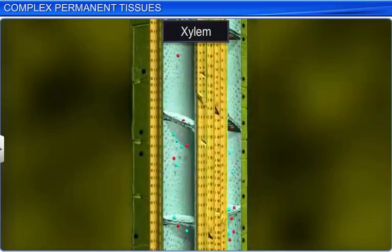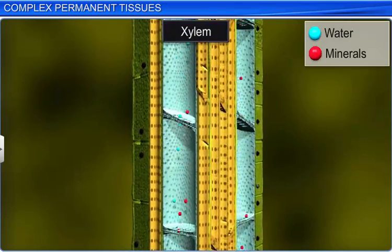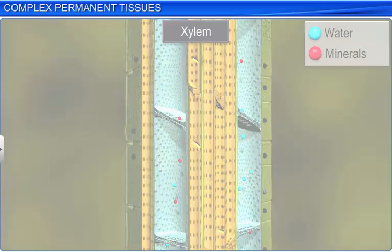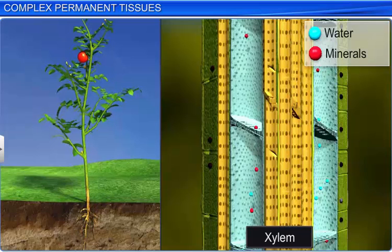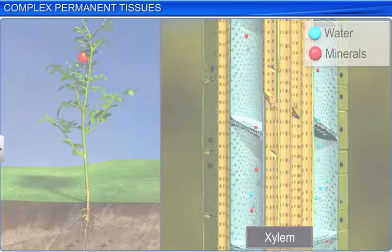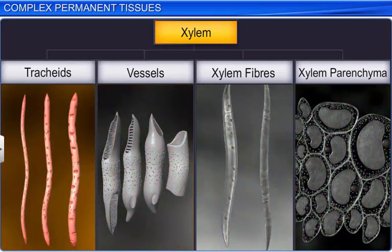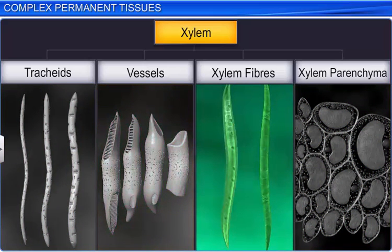Xylem performs the function of conduction of water and minerals from the roots to the stem and leaves. It also provides mechanical strength to the plant. Xylem consists of four different types of cells: tracheids, vessels, xylem fibers, and xylem parenchyma.